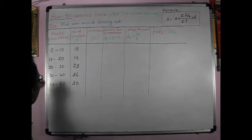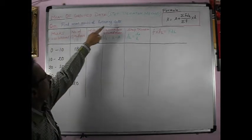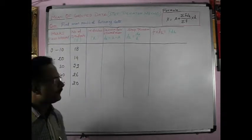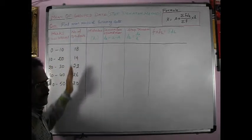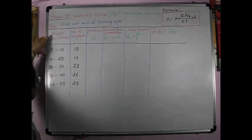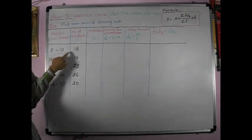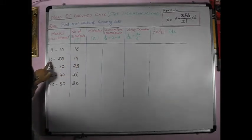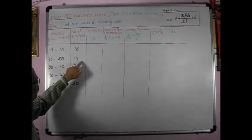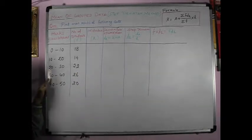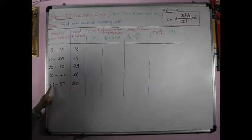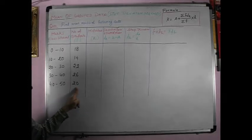Now, we have a question. Find mean marks of the following data. They have given us marks of the students and number of students. The marks obtained from 0 to 10, there are 18 students. 10 to 20, 14 students. 20 to 30, 22 students. 30 to 40, 26 students. 40 to 50, 20 students.